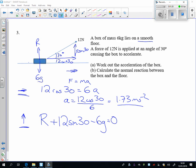That's going to equal 0. This box doesn't raise off the floor. And so R is equal to 6G minus 12 sine 30. And again, just tapping that into the calculator,